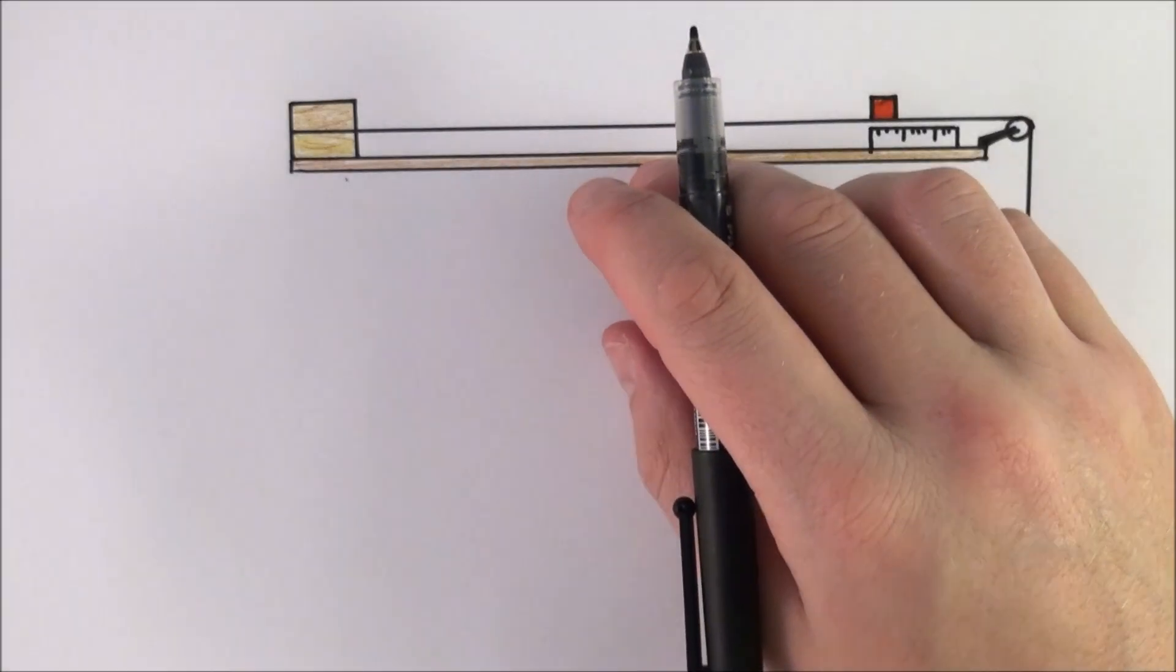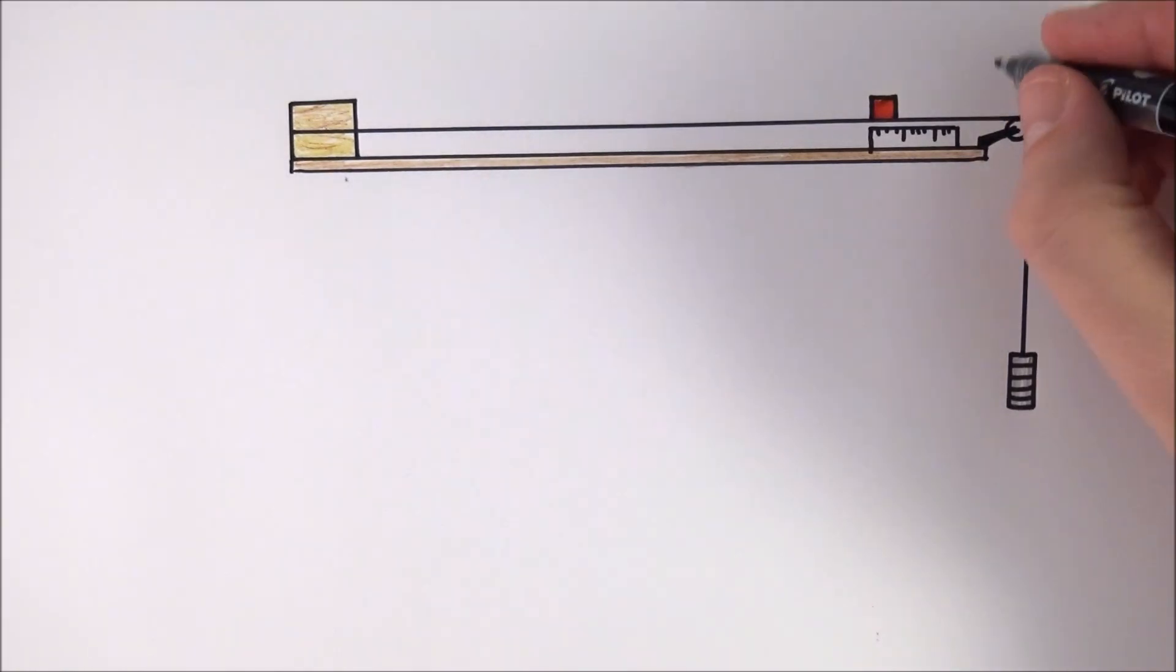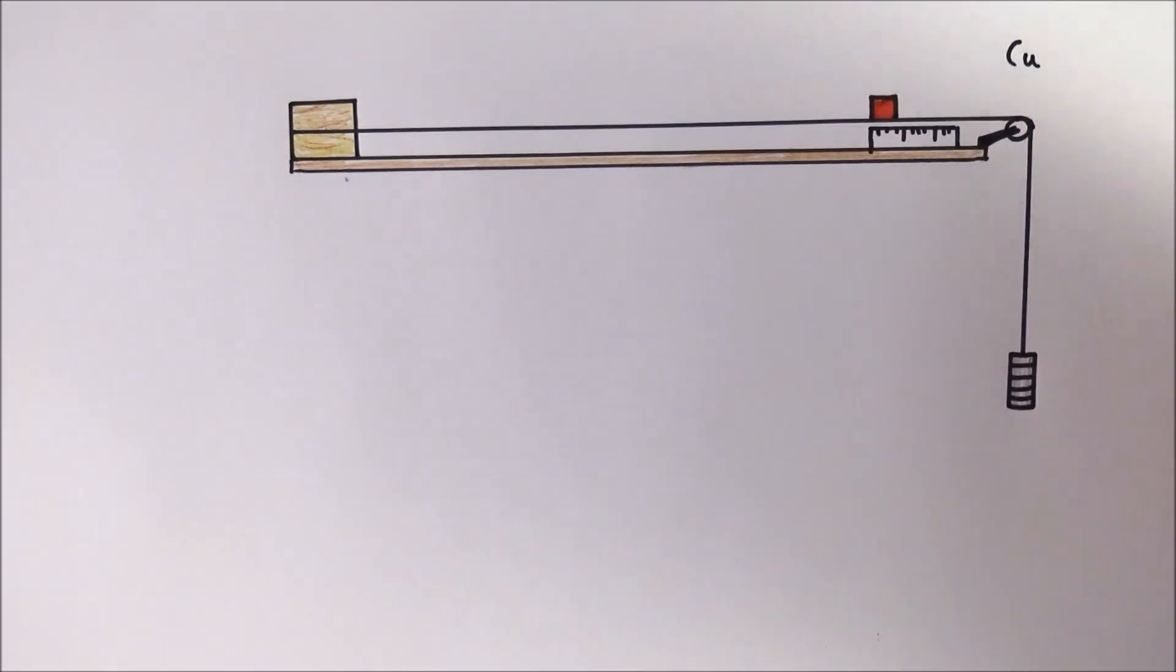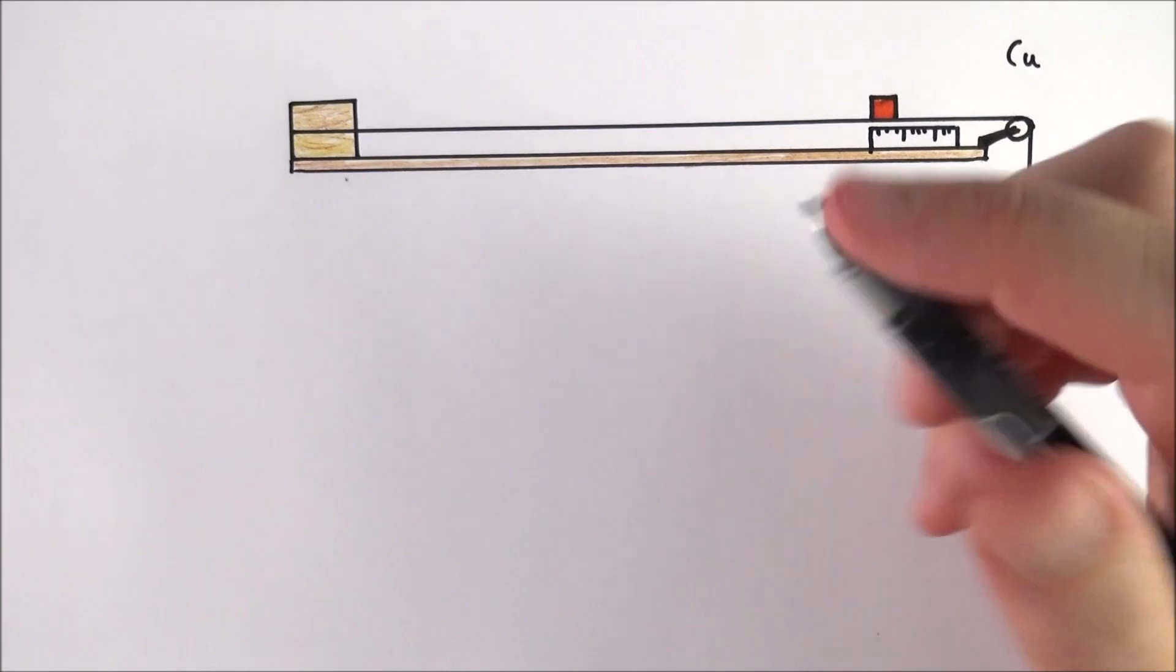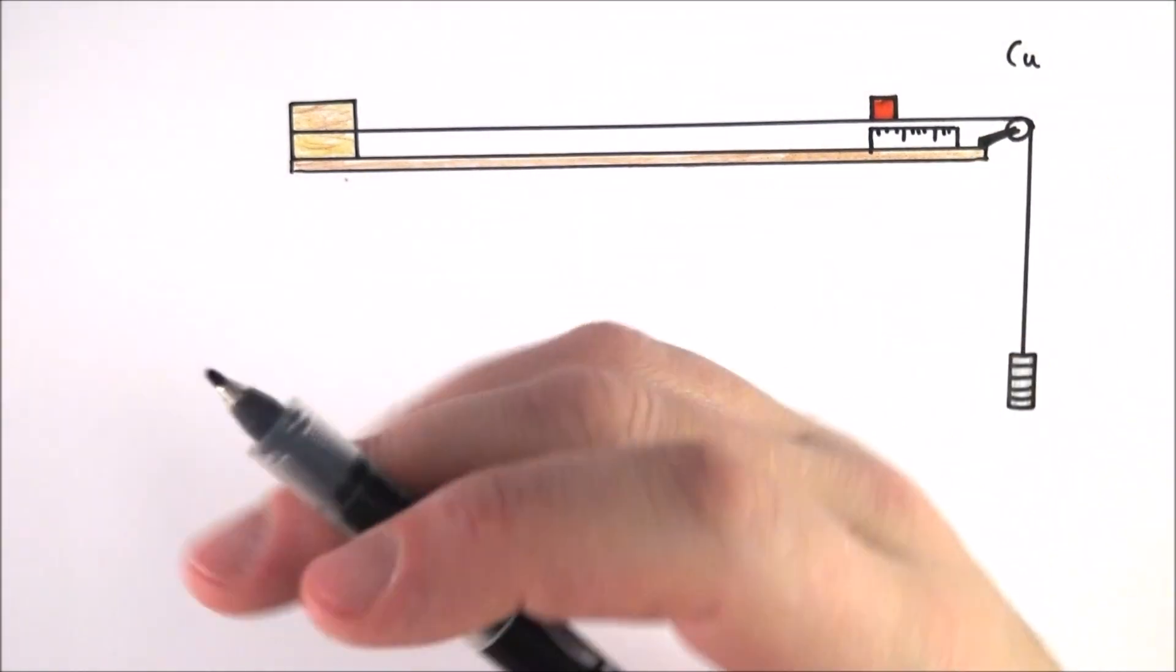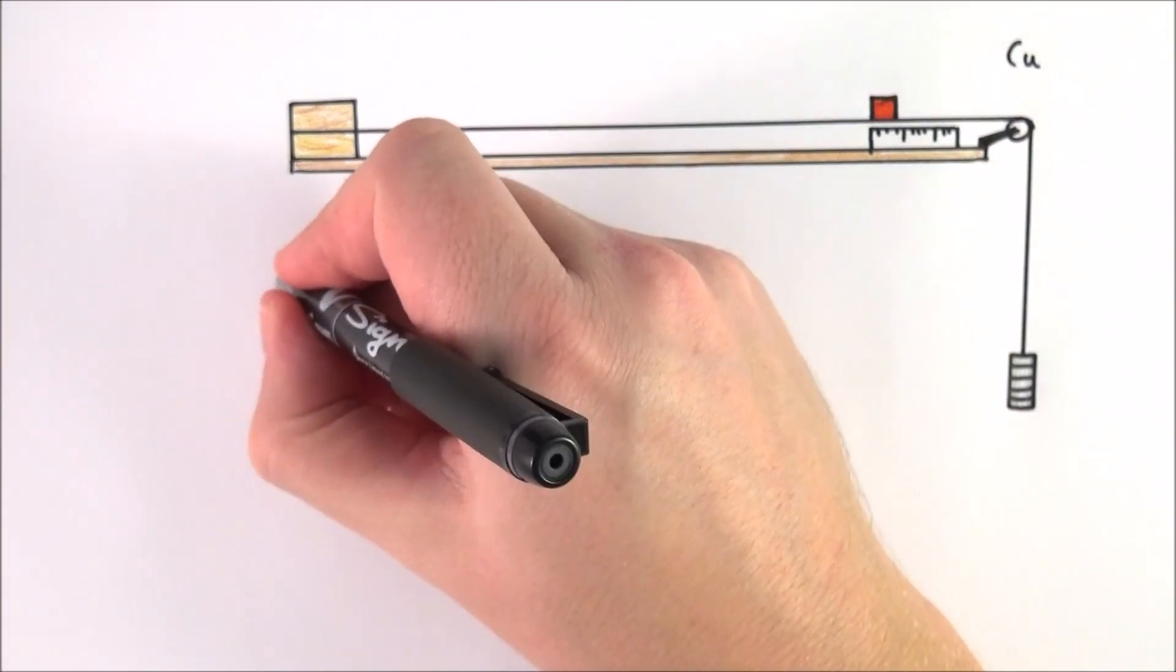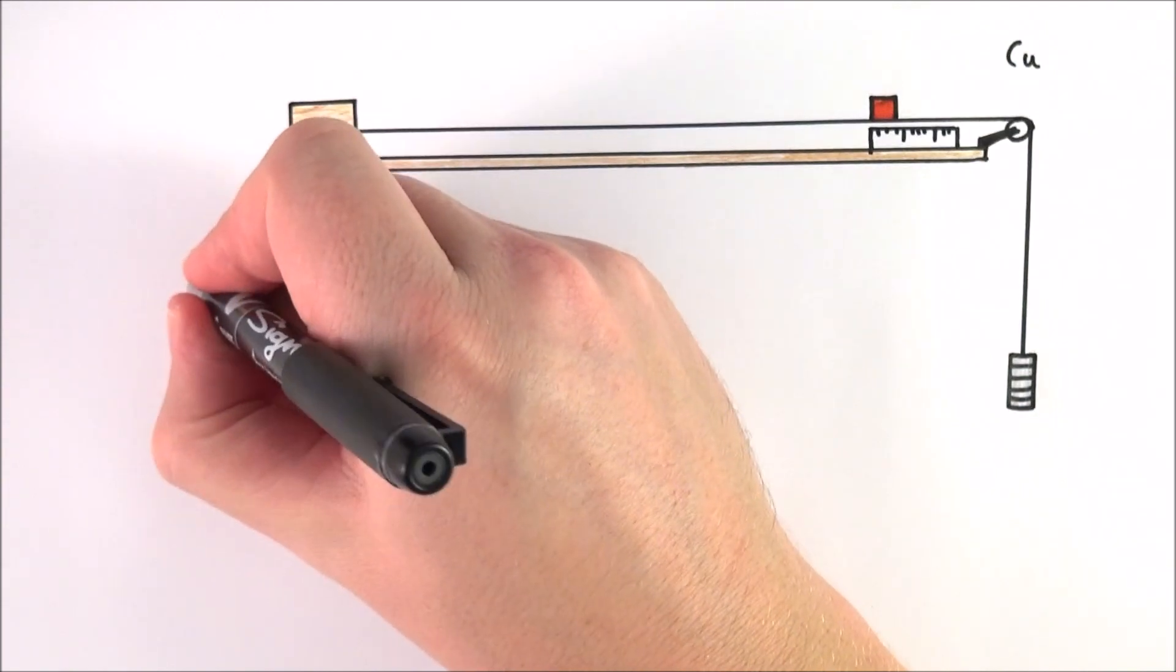Now this is the standard apparatus that you can use to measure the Young's modulus of copper wire. So first of all let's think about some of the theory.